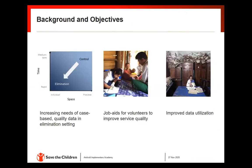In the background and objectives: Yamo is a malaria endemic region and we have transitioned from malaria control to malaria elimination. There is an increasing need for case-based quality data in the elimination setting, so we developed this app to solve these challenges. The end users are village health volunteers — community health workers we call MCMV, Integrated Community Malaria Volunteers — and it will serve as a job aid to improve their service quality.